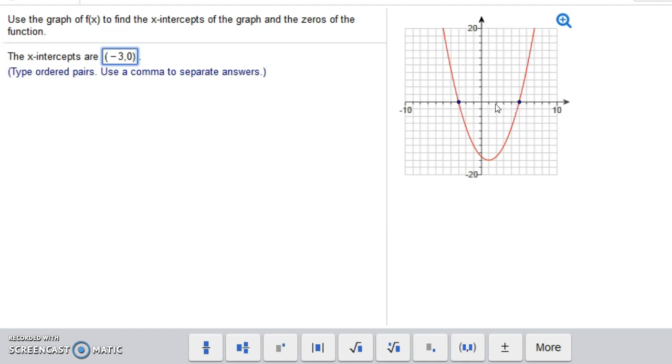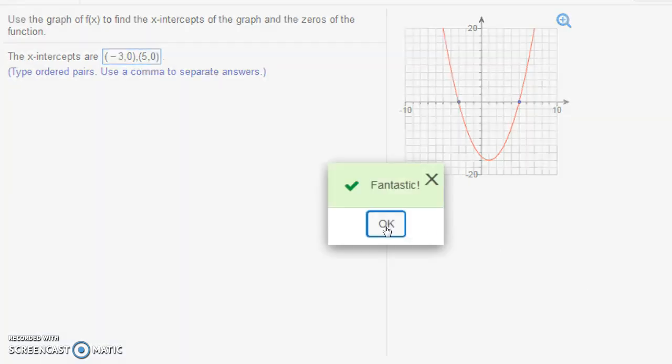And we also have one over here at 1, 2, 3, 4, 5, so 5, 0. Now it says to put commas to separate your answers, so let me do that here. We have two commas, and let me click check answer. And notice it says we got it right.